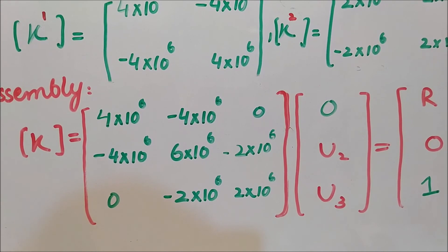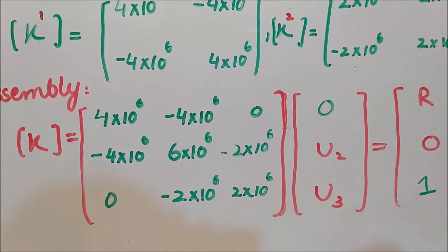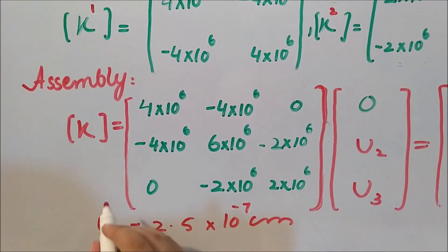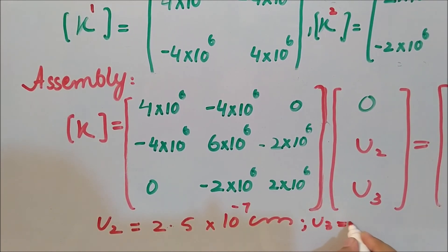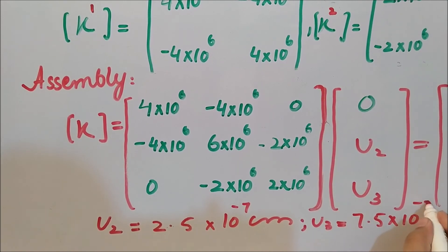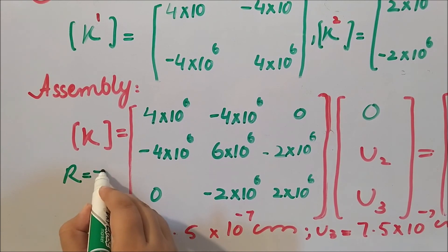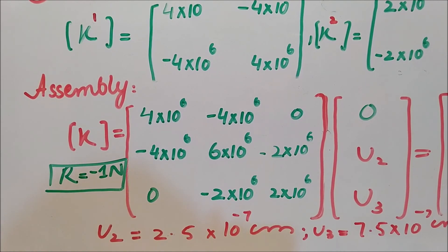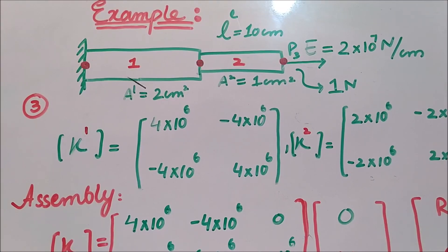Solving the system of equations, the displacement at node 2 is u2 = 2.5×10⁻⁷ cm, the displacement at node 3 is u3 = 7.5×10⁻⁷ cm, and the reaction force R = -1 Newton. This is how we solve a bar problem using the direct method. We can also compute stress and strain if required. Thanks for watching — subscribe for more upcoming videos.